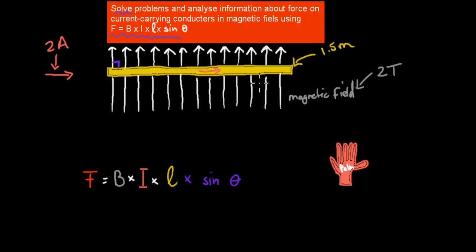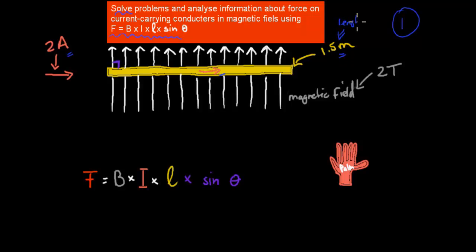So for our first example, we have the direction of the current given here, and we know our current is 2 amps. We have the length of our conductor, which was 1.5 meters. The magnetic field is 2 Teslas, and our angle theta is 90 degrees.